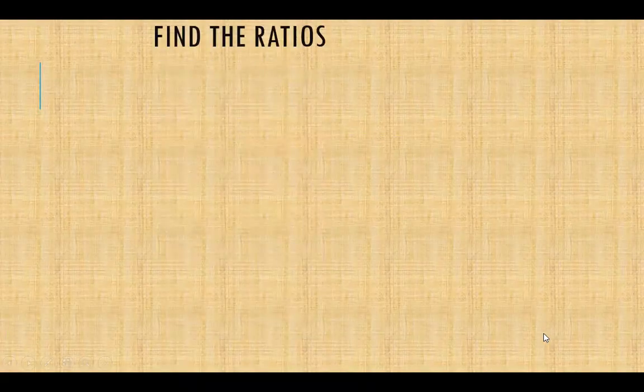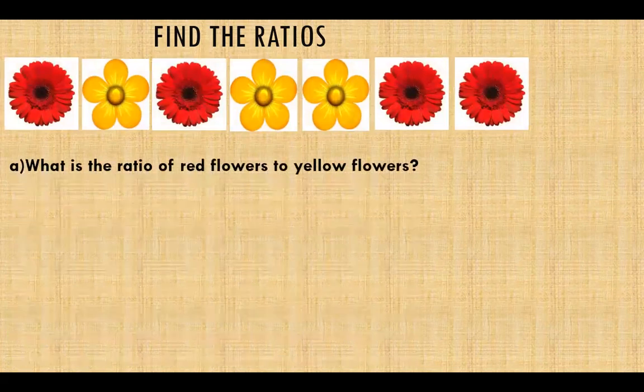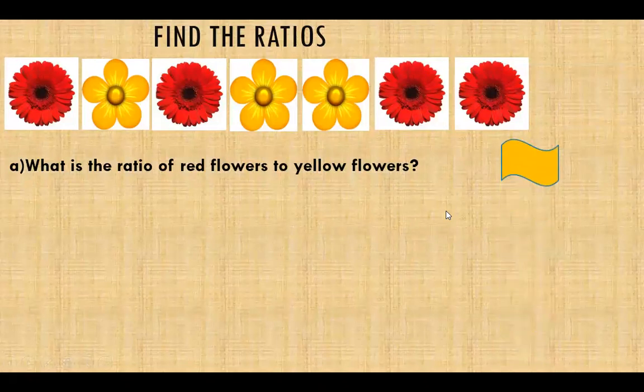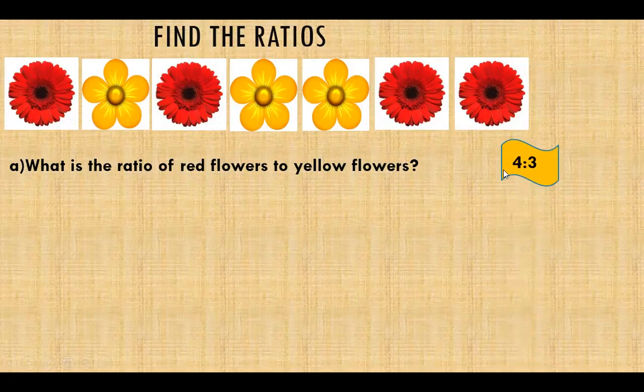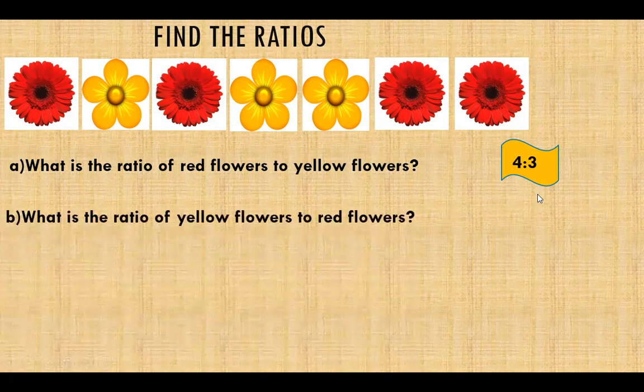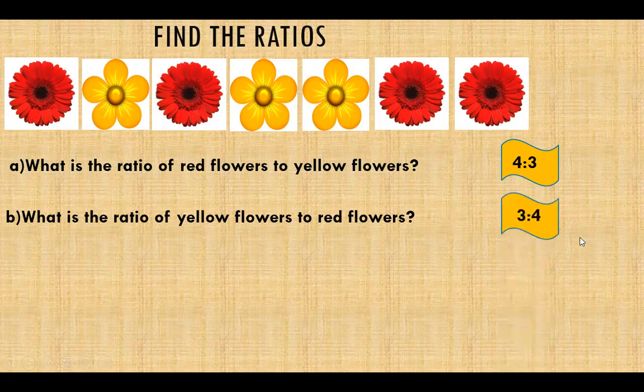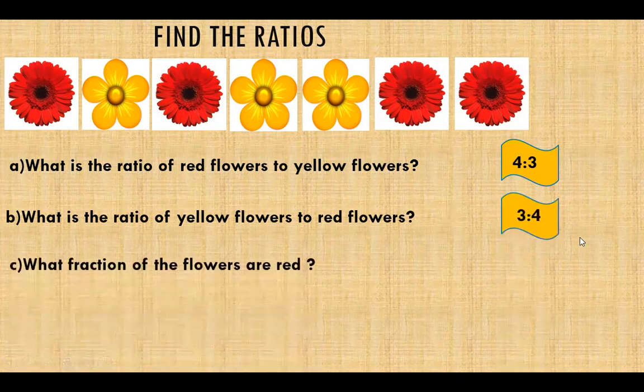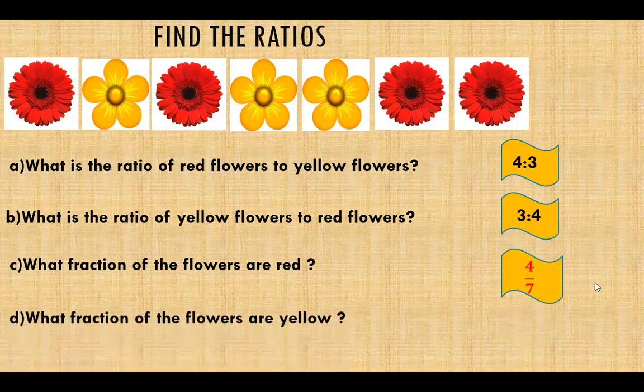Find the ratios. What is the ratio of red flowers to yellow flowers? Yes, it is 4 is to 3. What is the ratio of yellow flowers to red flowers? It is 3 is to 4. What fraction of the flowers are red? It is 4 by 7. And what fraction of the flowers are yellow? It is 3 by 7.